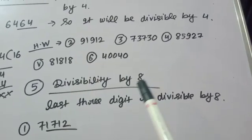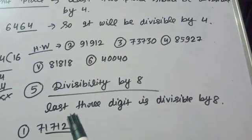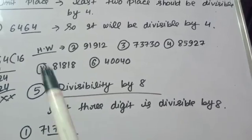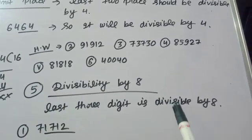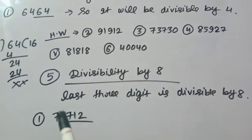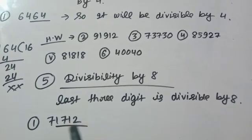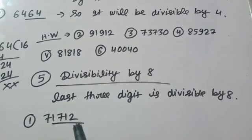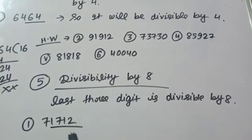So what will be the divisibility rule of 8? Last three digits should be divisible by 8. You need to check in this number 71712 whether last three digits will be divisible by 8 or not.